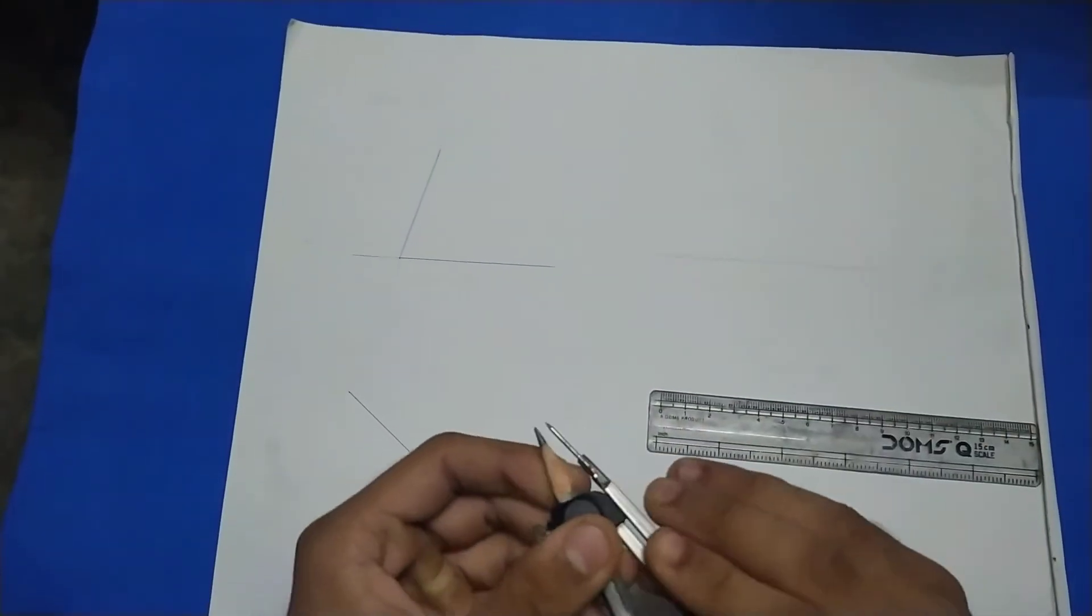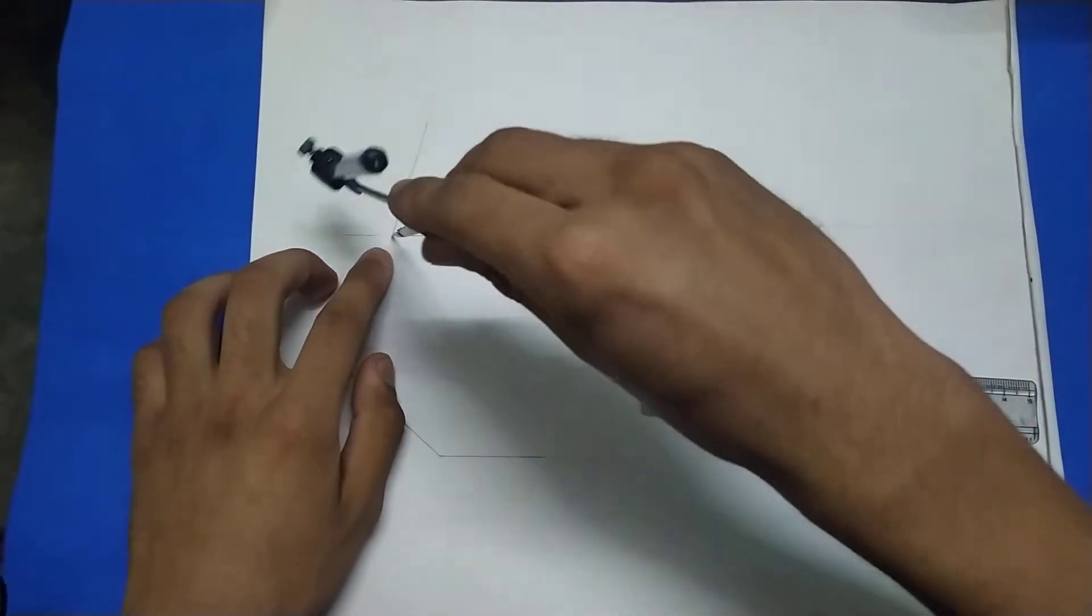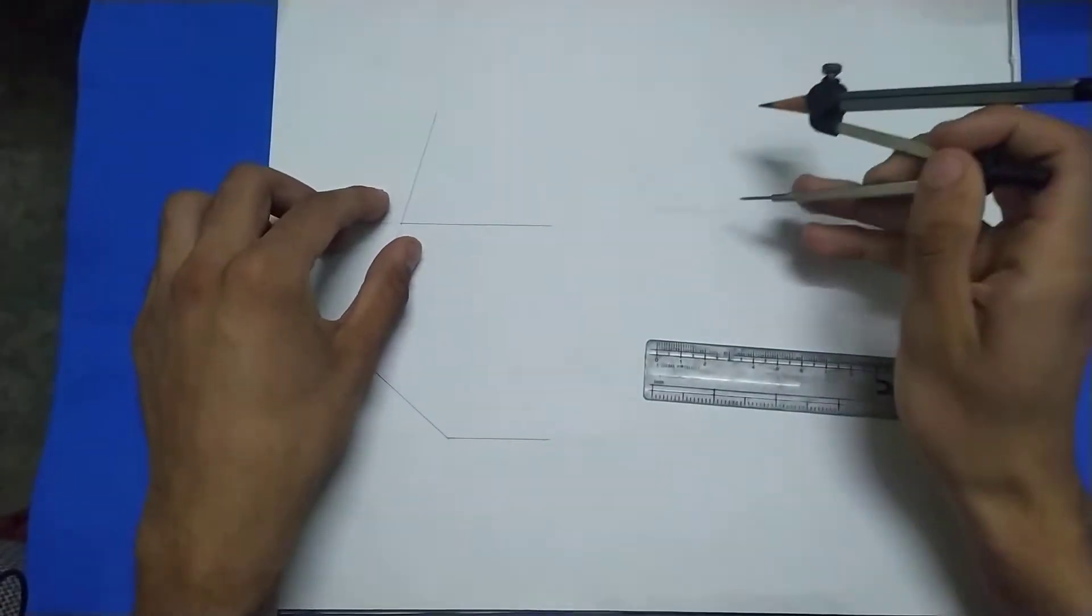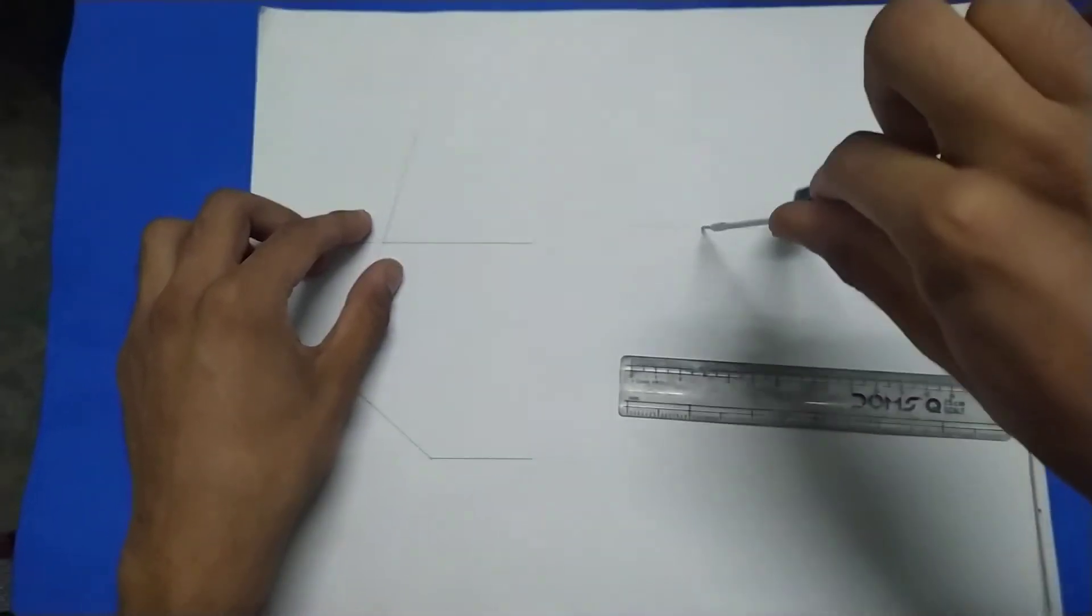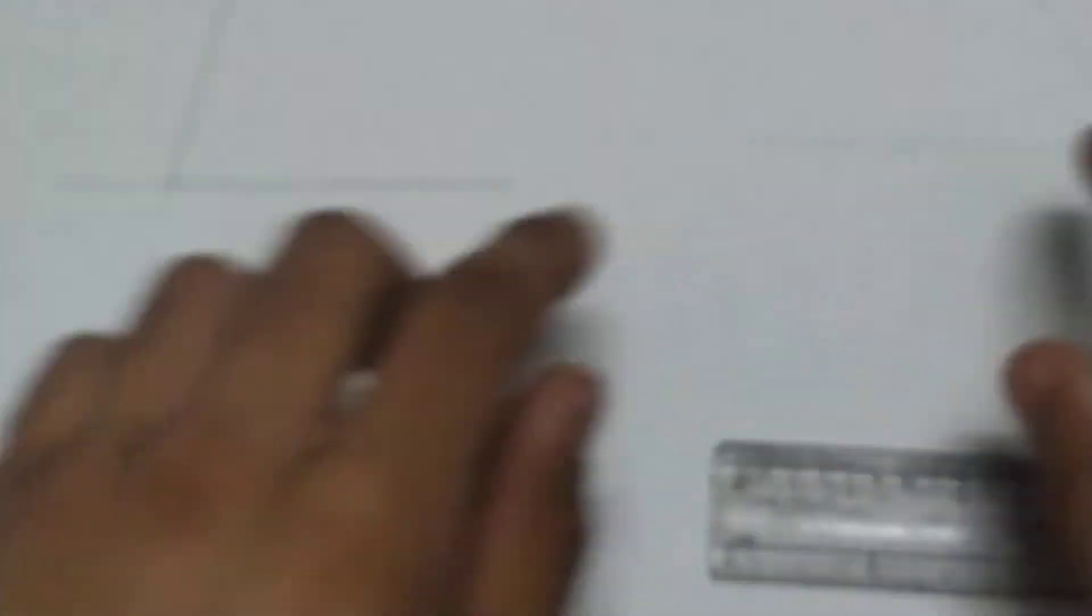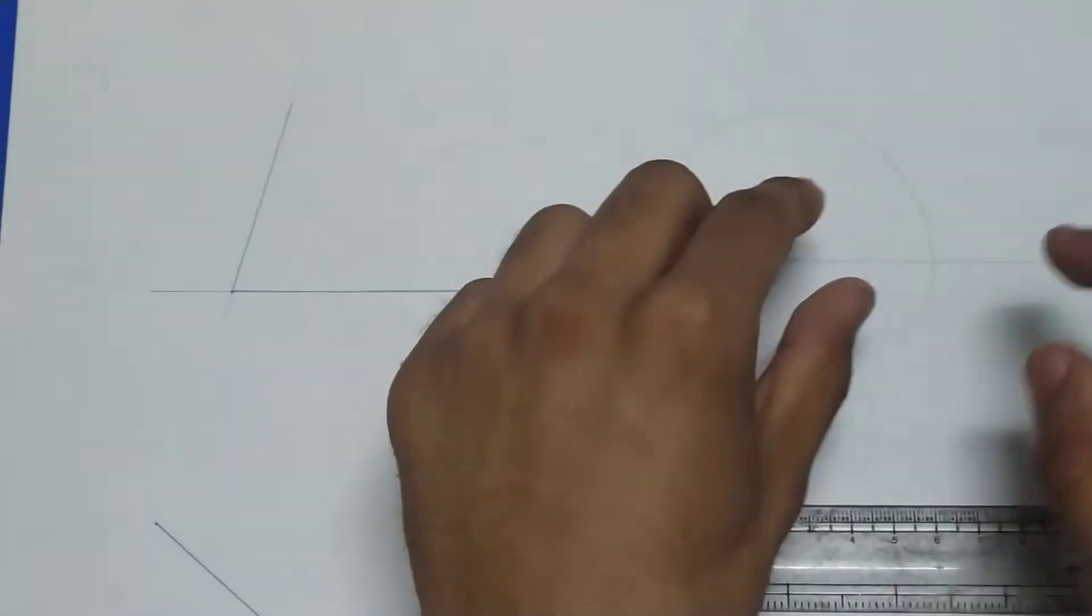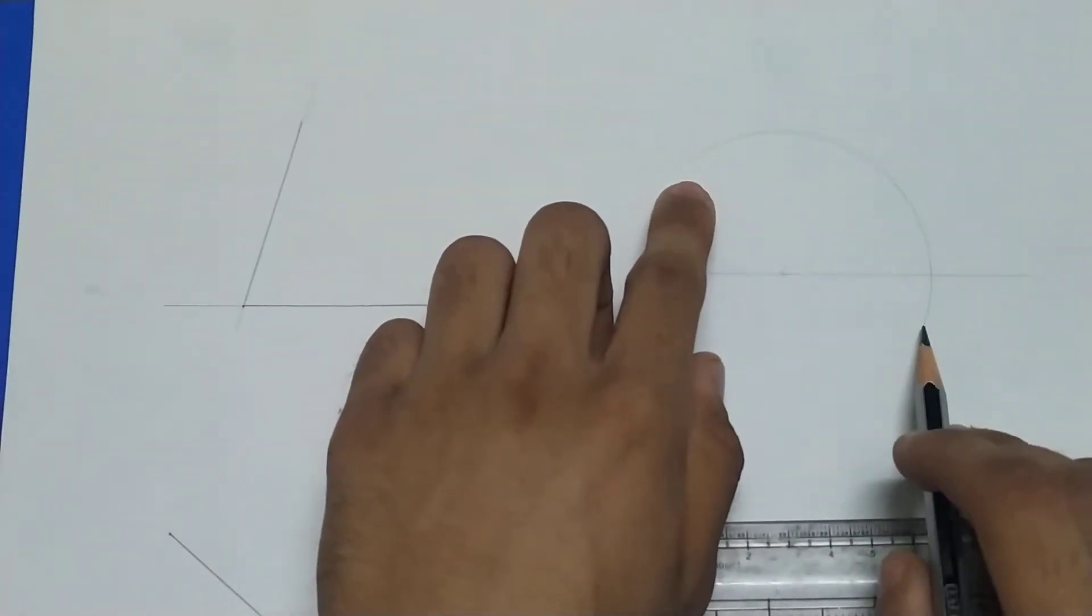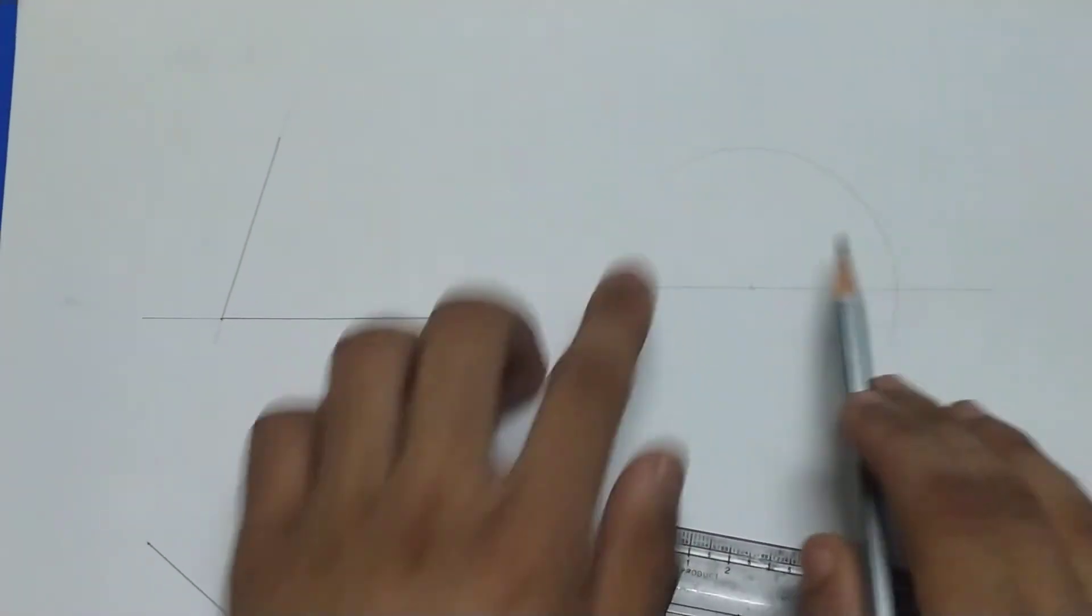The next step is to open your compass, put it right there and open an arc of any length. Just make an arc like this. Now you approximately know this angle, so your arc should cover. Your angle will form something like this, so your arc should completely cover this angle or this length. This angle will be greater than this one.